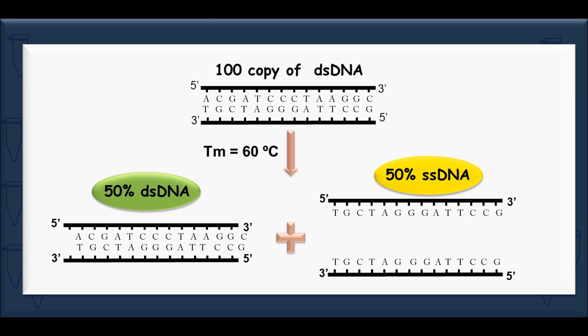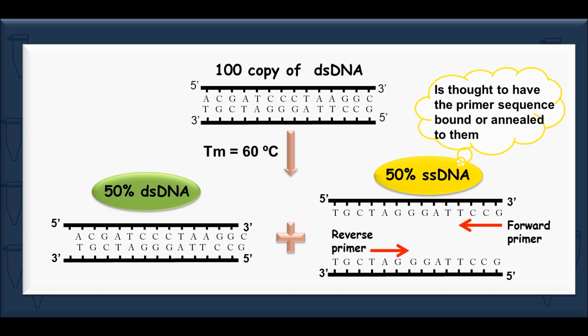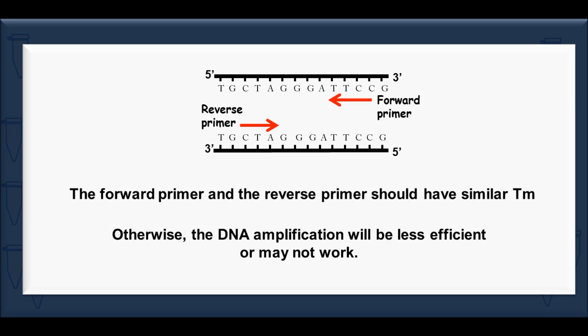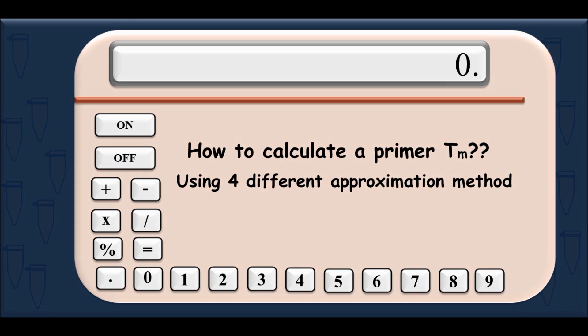The 50% of the single-stranded DNA is thought to have the primers bound to them. The forward primer and the reverse primer should be designed such that they have similar melting temperatures, otherwise the DNA amplification will be less efficient or may not work.